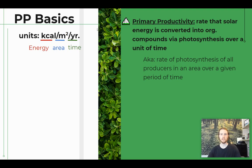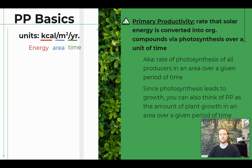We can also think of this as the rate of photosynthesis of all the producers in a given area over a period of time. Using the analogy of plants as workers in a factory, the number of gadgets they produce over a given period of time would be the productivity of the factory. We can also think of this as the rate of plant growth, since photosynthesis translates into plant growth — areas with higher productivity will have higher plant growth.